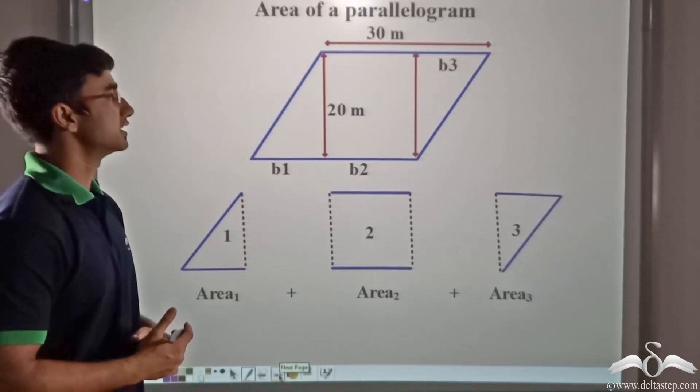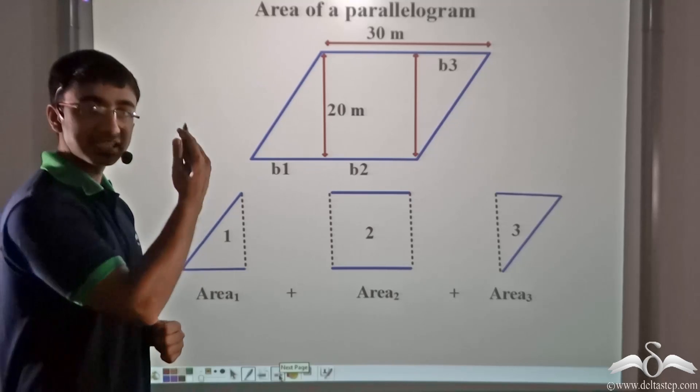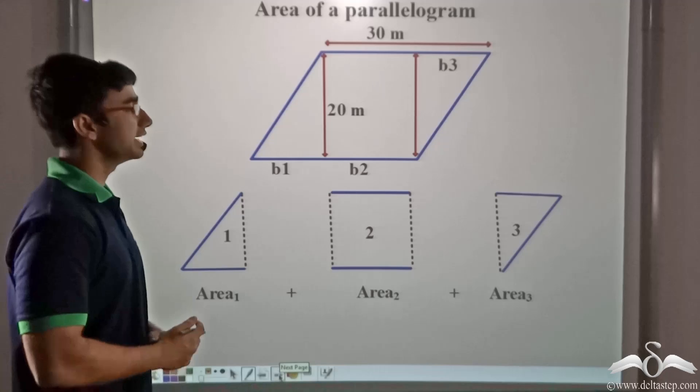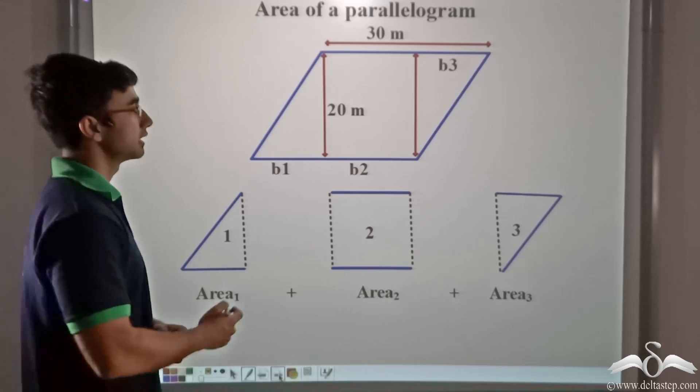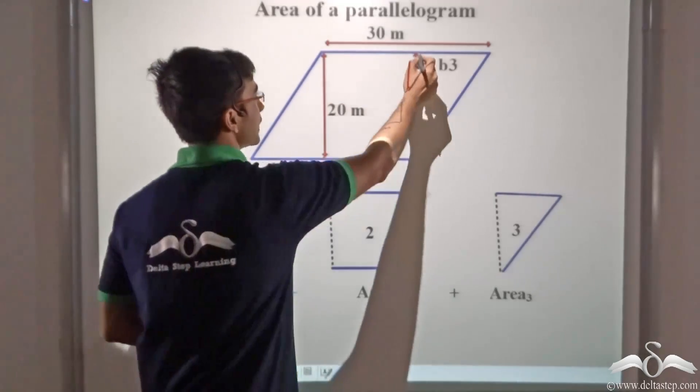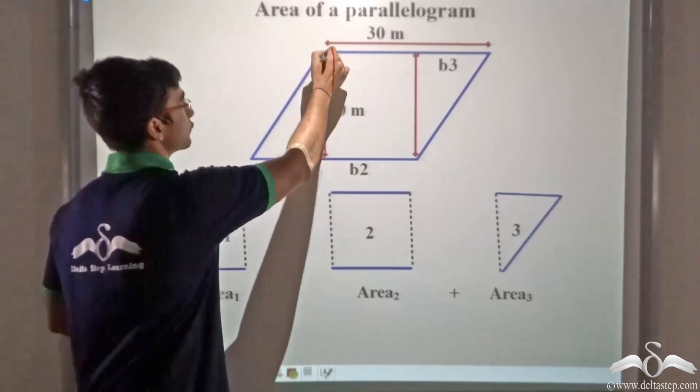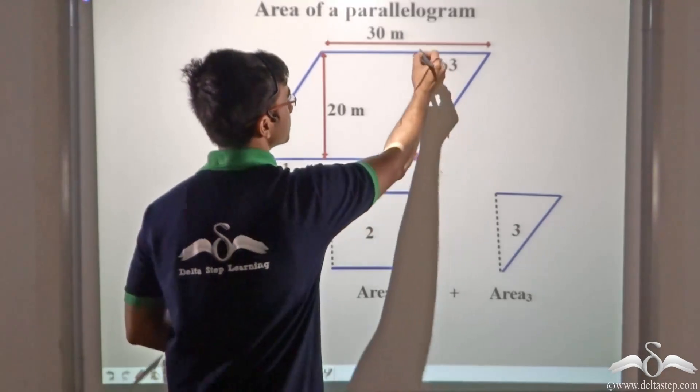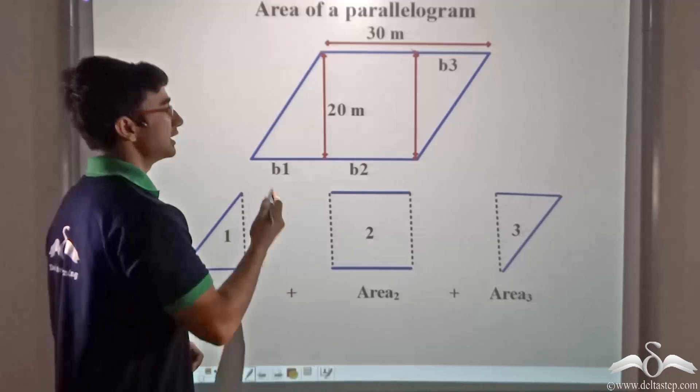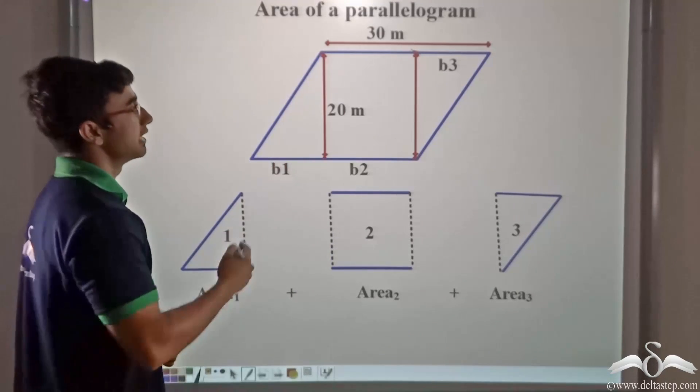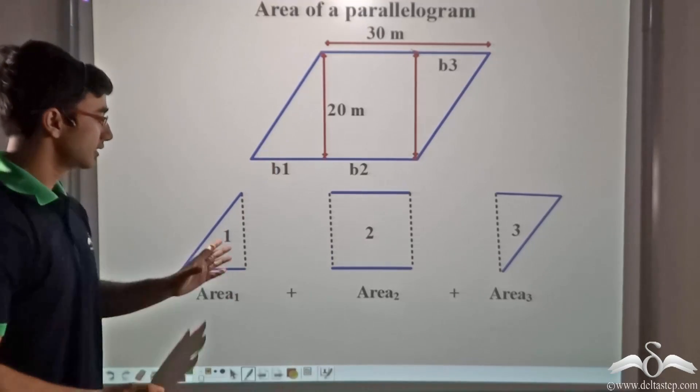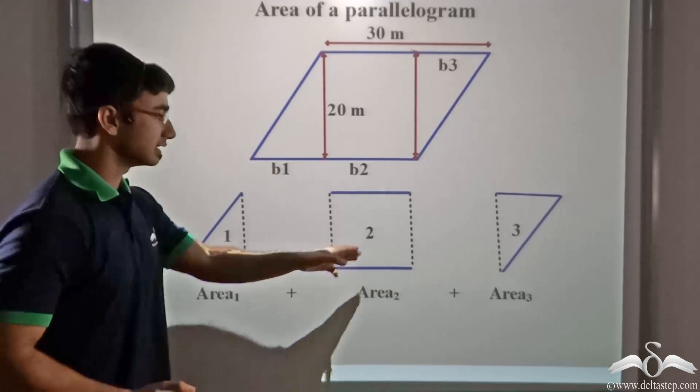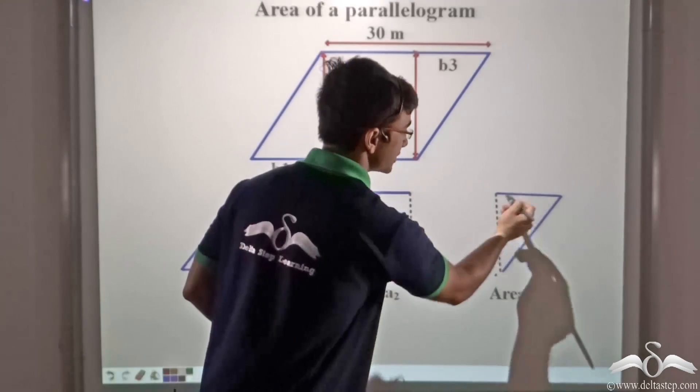So over here we have considered a parallelogram, the same parallelogram of Mrs. Verma's store, the floor, and we have divided it into three particular parts. With the help of these two lines, from here we drop a perpendicular on this point and from here we drop a perpendicular on this point. Thus dividing the parallelogram into three parts and we find that we get three different shapes: this triangle, this rectangle, and this triangle.